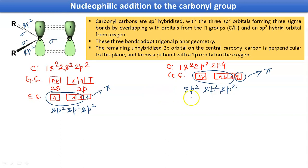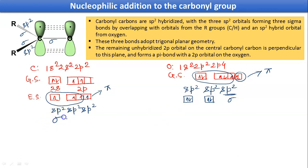In the case of oxygen, 2 sp2 orbitals will contain lone pairs, and the third sp2 will form the sigma bond with carbon. So for carbon: sigma, sigma, sigma, and 1 pi. For oxygen, one of the sp2 is involved in the sigma bond formation, and there will be 2 lone pairs. And this is our pi bond.